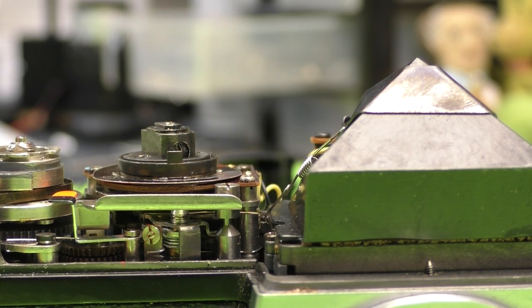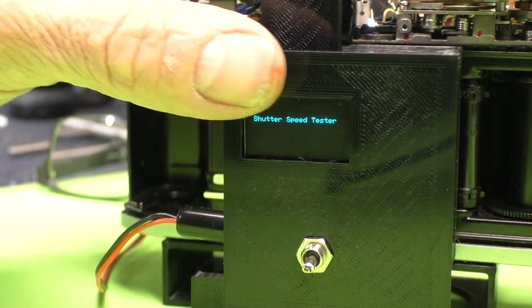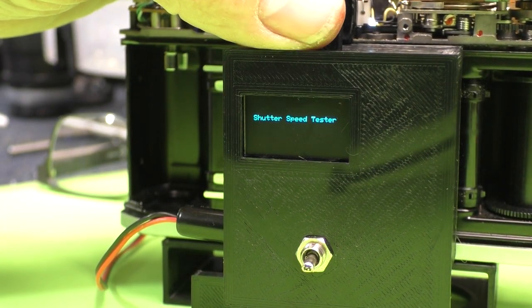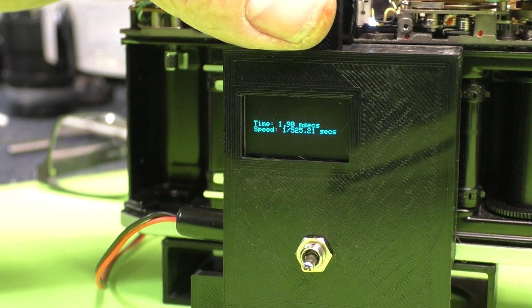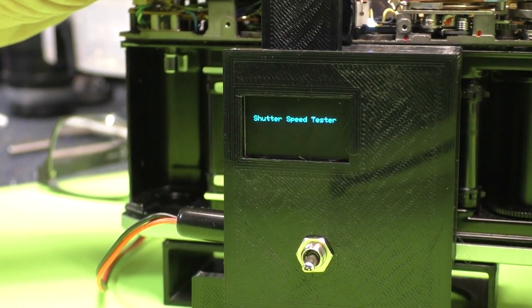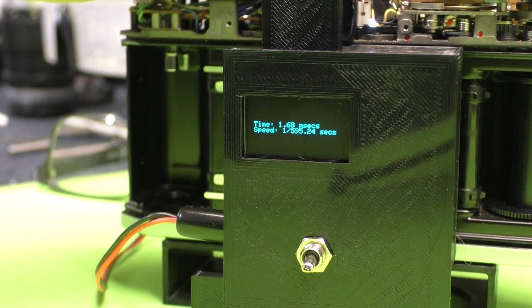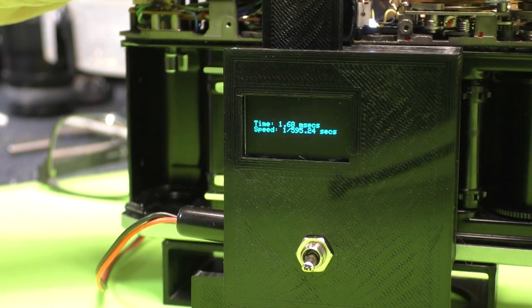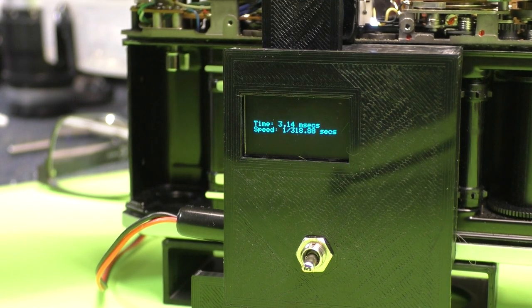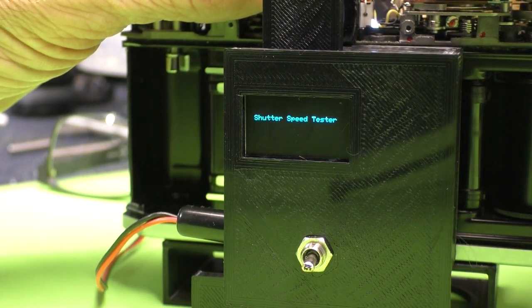Let's get the shutter speed tester set up and get a baseline measurement and go from there. Okay, I've got everything set up here. And I've got the shutter cocked. We're set at 1/1000th of a second. And you can see it reads 1/525th. That is definitely not in the ballpark. Let's try it again. Take a few samples. Same thing. Let's try 1/500th of a second. And it measures 1/318th. So, yes, obviously, they are running slow on speeds.